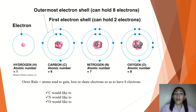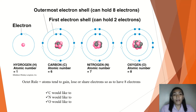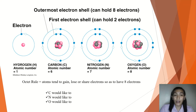Your outermost electron shell can hold up to eight electrons while the first electron shell can hold two electrons. Our first element is hydrogen, with an atomic number of one. Therefore, you only have one electron for that.